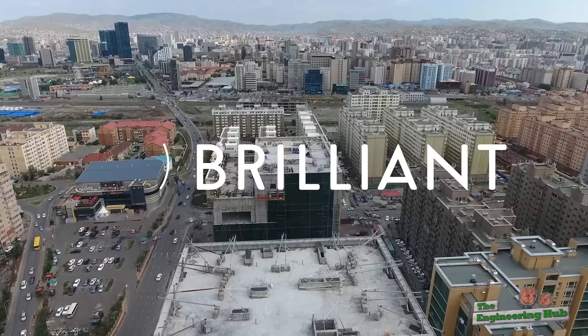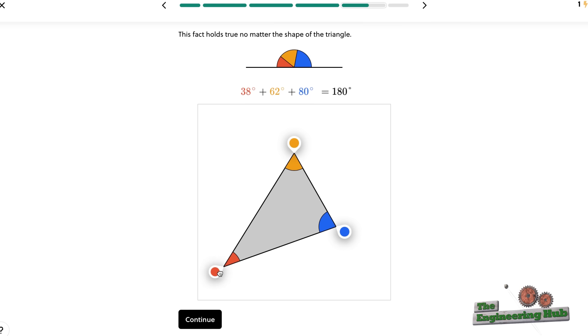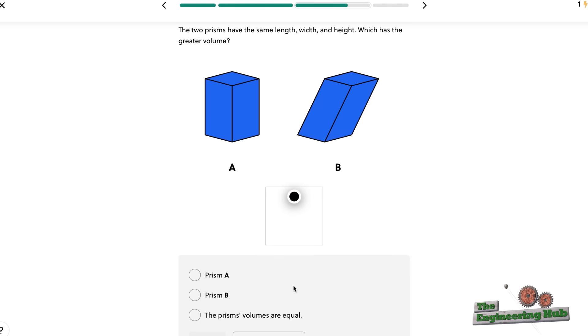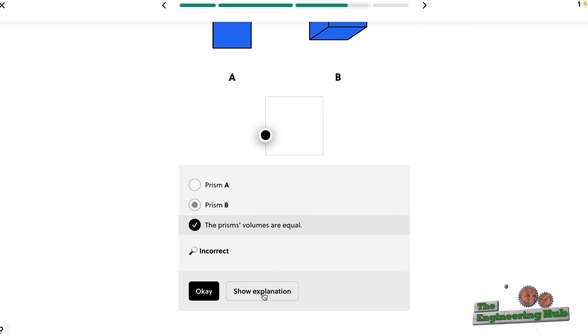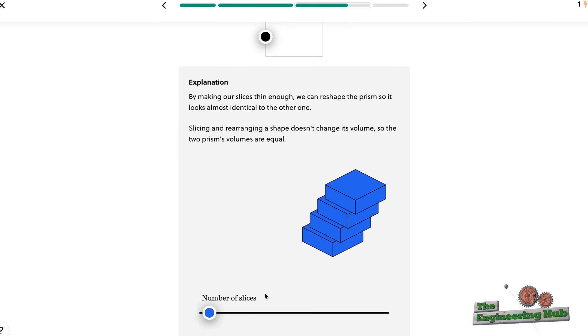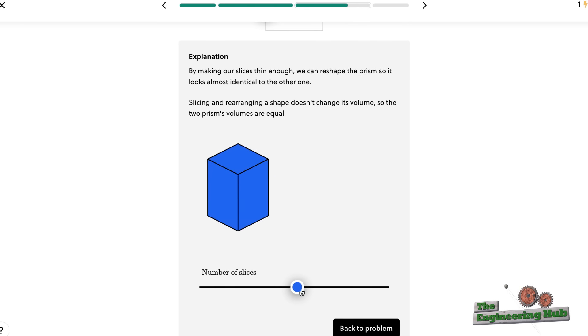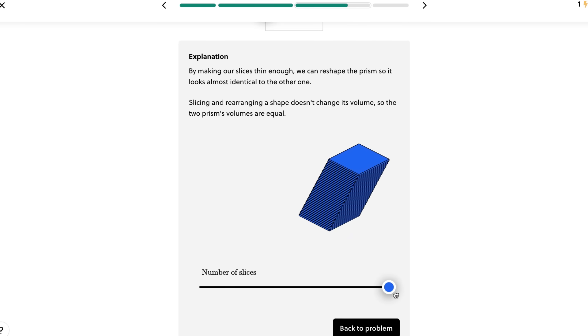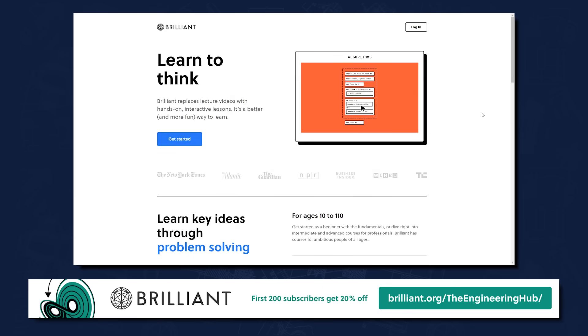Brilliant is an interactive learning platform for STEM topics similar to what we showcase on this channel. This particular video was built on a deep understanding of geometric fundamentals, which is exactly the kind of knowledge you can hone yourself with Brilliant. The unique, hands-on interface of Brilliant makes learning challenging topics intuitive. Engineering requires intuitive understanding of scientific principles to be implemented in the real world, and Brilliant makes developing this practical intuition fun through their interactive visual lessons that you can complete at your own pace. Head to brilliant.org forward slash the engineering hub to get started for free with Brilliant's interactive lessons. The first 200 viewers will get 20% off Brilliant's annual premium subscription to kickstart your hands-on learning.